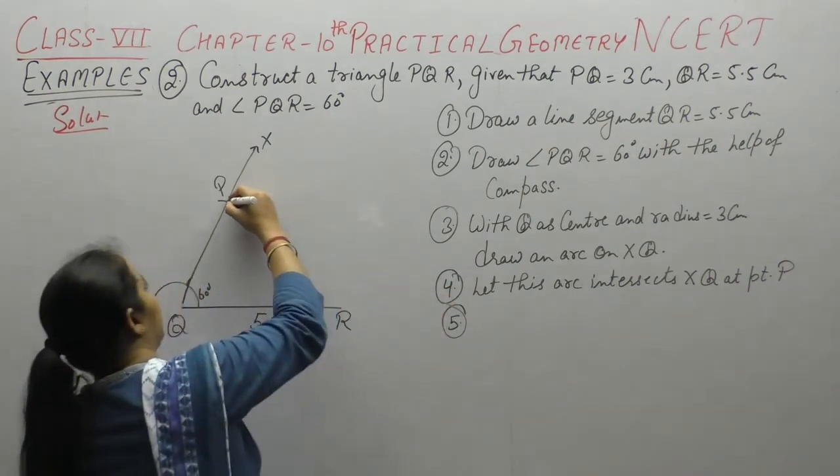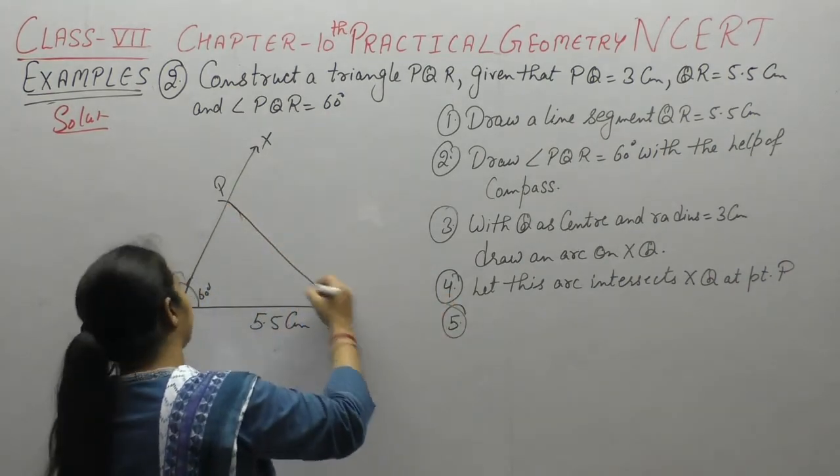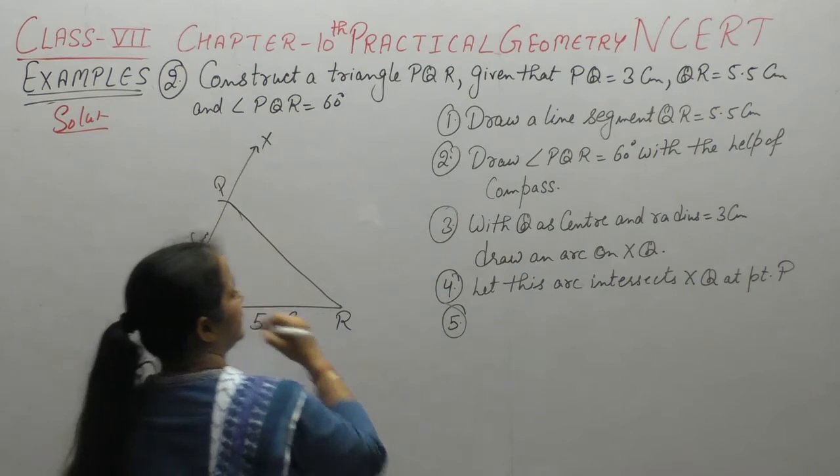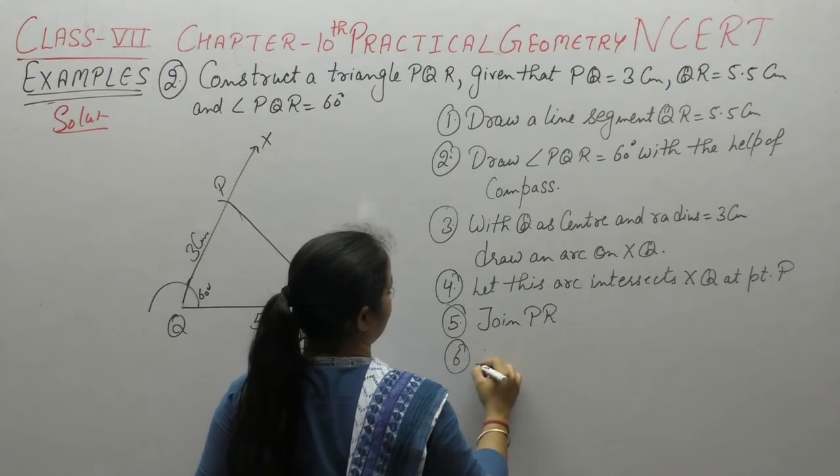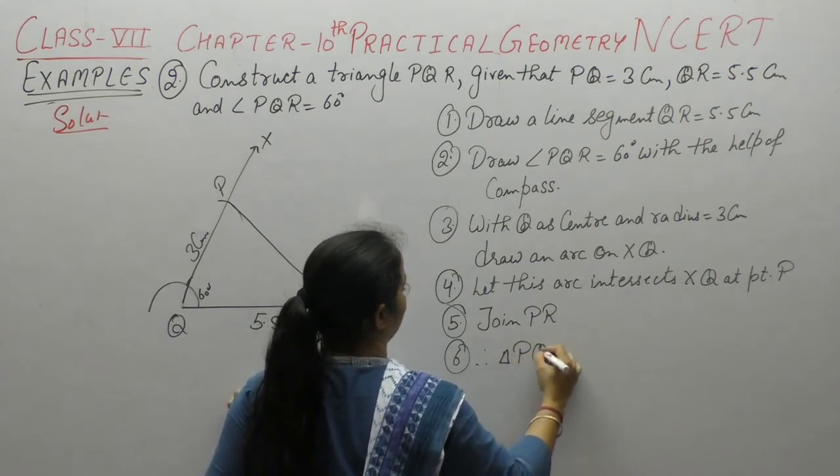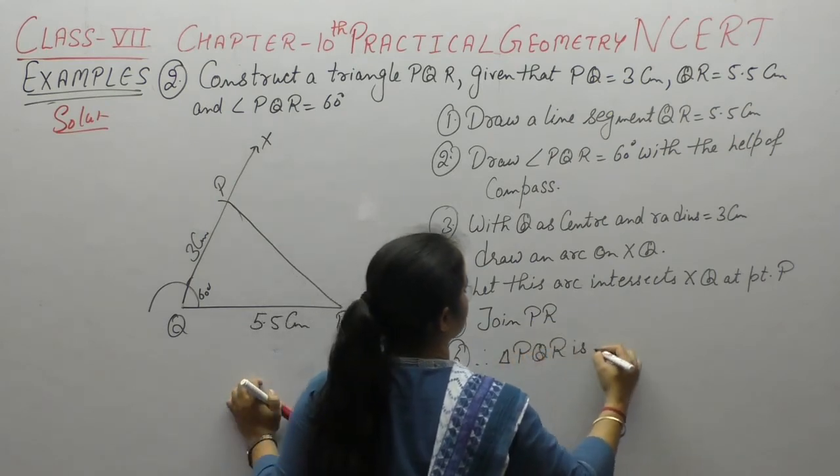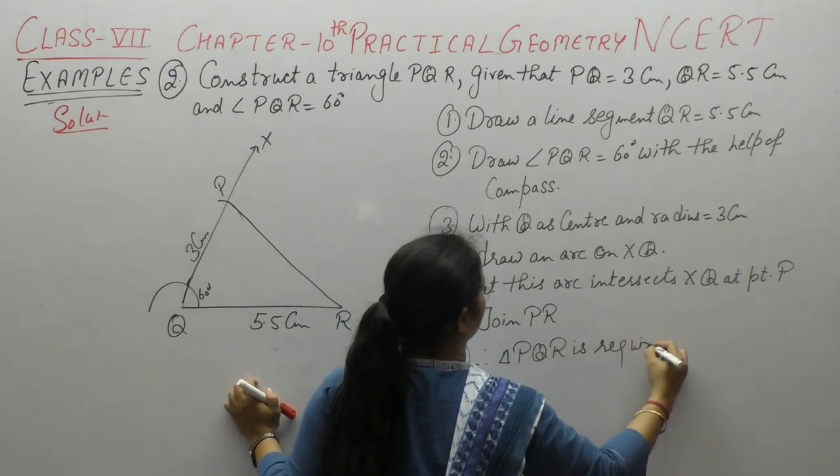Next step: arc lagai, is joint PR. This is joint PR, this is 3 cm. Joint PR, therefore triangle PQR is the required triangle.